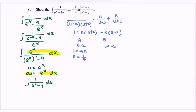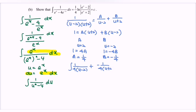Continuing with u equals negative 2: we get 1 equals negative 4B, so B equals negative 1 over 4. Substituting back, we integrate (1/4)·(1/(u minus 2)) plus (negative 1/4)·(1/(u plus 2)) du, which we rewrite as the integral of (1/4)·(1/(u minus 2)) minus (1/4)·(1/(u plus 2)) du.